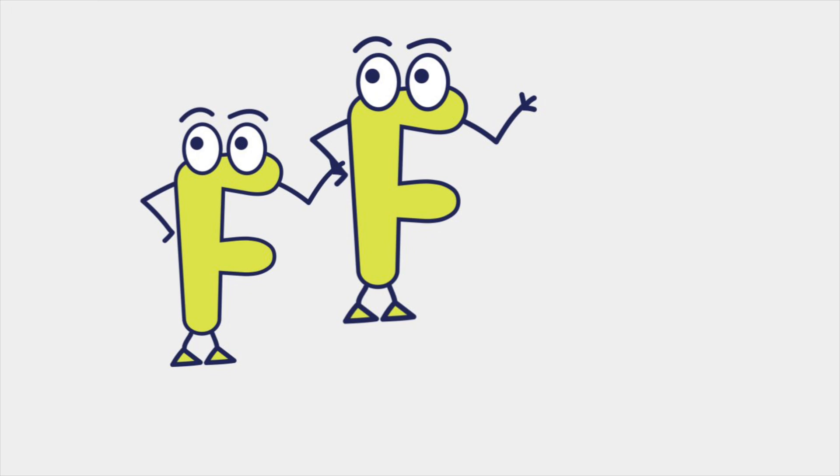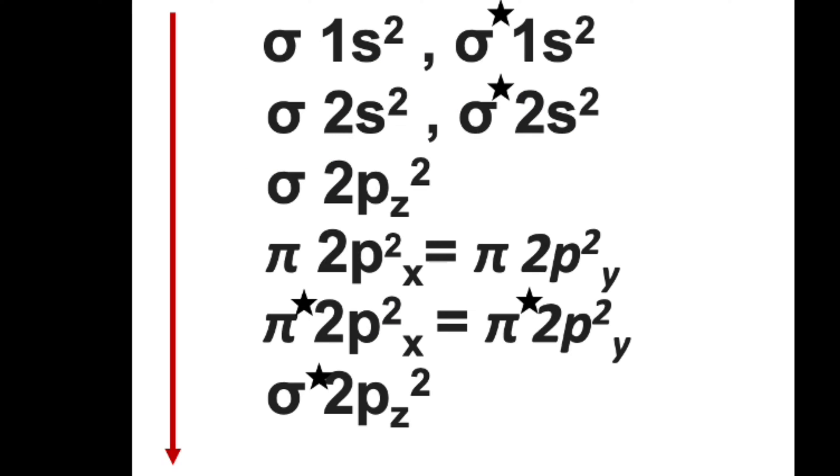Here you can see a table which tells about filling of molecular orbitals based on increasing energy level. It means after filling sigma 1s molecular bonding orbitals, then only electrons can enter into sigma star 1s anti-bonding molecular orbitals.